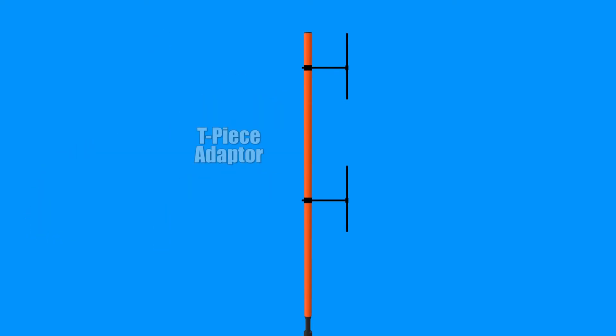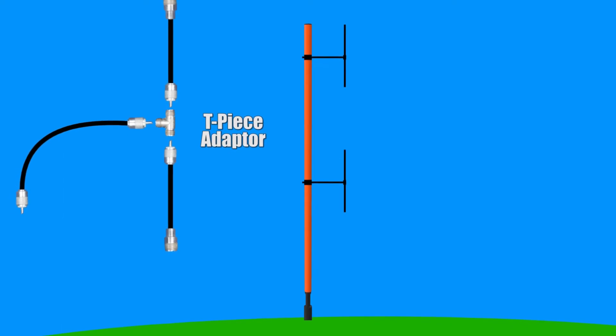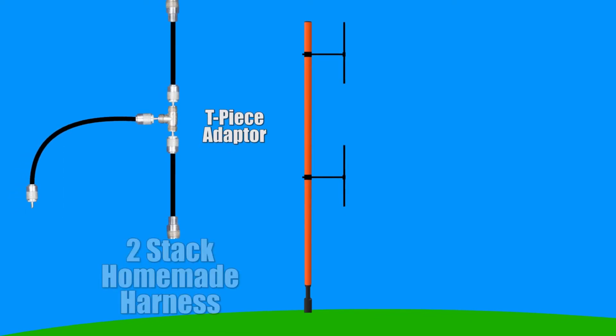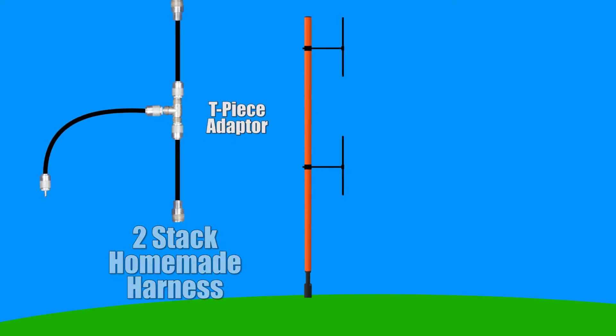You can simply place a T-piece cable adapter where all three cables intersect, creating the harness as a big T-piece cable. This is simple enough for a two-stack array, but a little more complicated for a four-stack, but we will get into that in a minute.